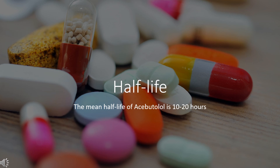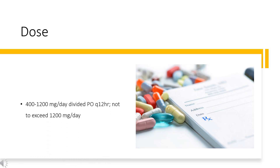Half-life: The terminal elimination half-life is 10-20 hours in healthy patients. Dose: Hypertension — 400-1200 mg per day divided every 12 hours, not to exceed 1,200 mg per day. Ventricular arrhythmias — 400-1200 mg per day divided every 12 hours, not to exceed 1,200 mg per day. Angina — 400-1200 mg per day divided every 12 hours, not to exceed 1,200 mg per day.